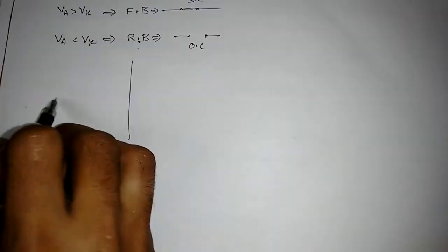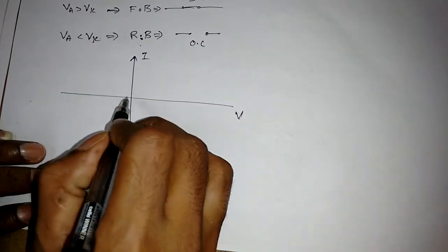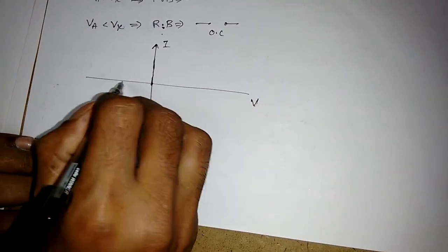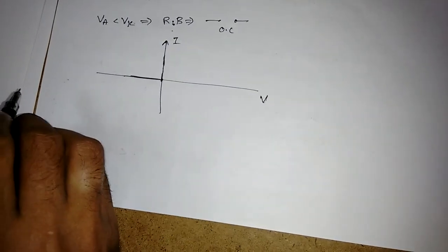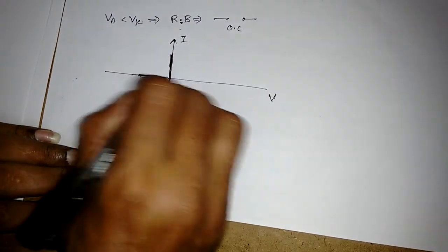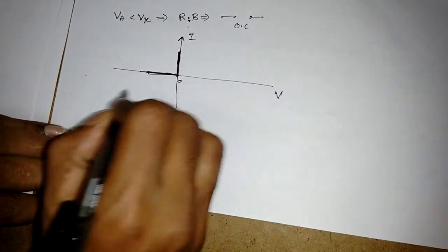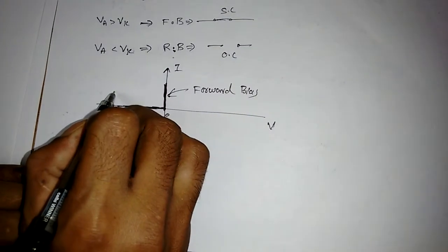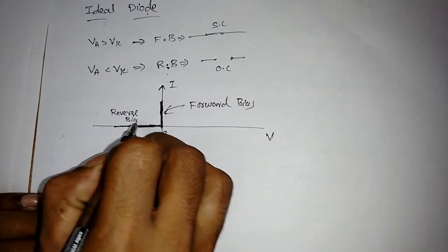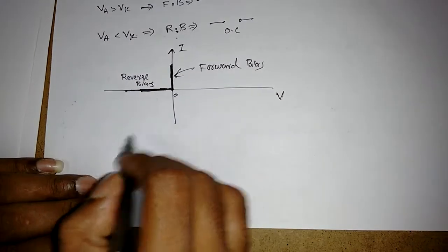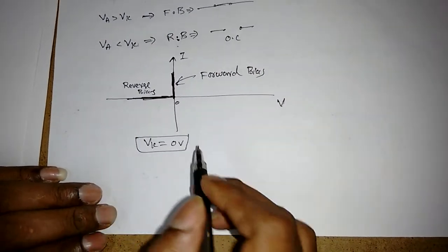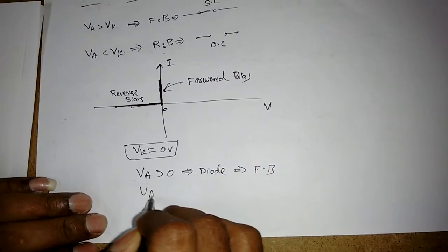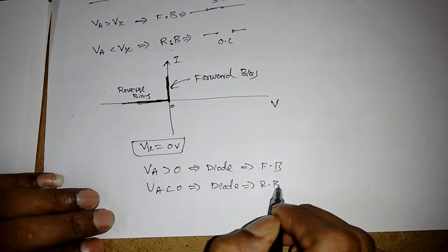Now if we draw the IV characteristics — with I on the vertical axis and V on the horizontal axis — for an ideal diode, the moment V is greater than 0, current starts flowing. Whenever V is less than 0, there is no current. From this, we conclude that VK is taken as 0 volts, so when VA is greater than 0 the diode is forward biased, and when VA is less than 0 the diode is reverse biased with no current flowing at all.